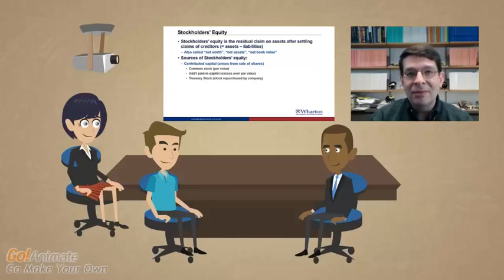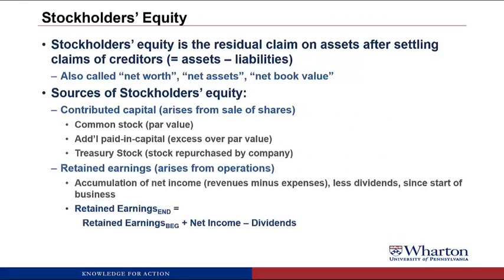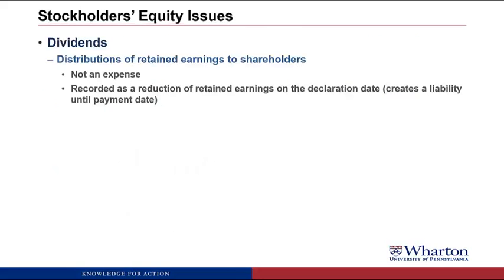You'll see more of this next video. The other source of stockholders' equity is retained earnings, which arises from operating the business. This is the accumulation of net income — revenues minus expenses — less any dividends since the start of the business. Retained earnings at the beginning of the year plus net income minus dividends equals retained earnings at the end of the year. Dividends are distributions of retained earnings to shareholders — they're not an expense — and they're recorded as a reduction of retained earnings on the date the board declares the dividend. If not paid in cash on that date, you create a liability to pay the shareholders until the payment date.